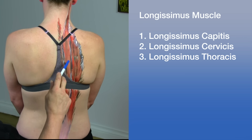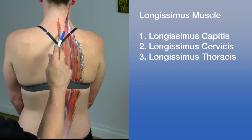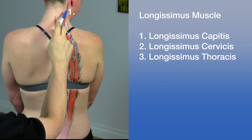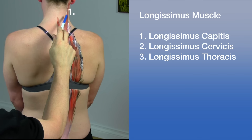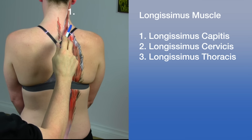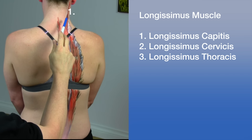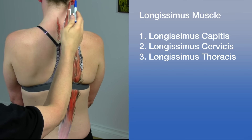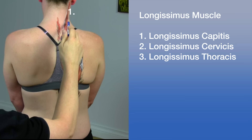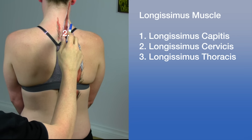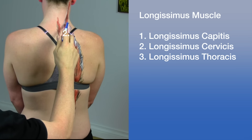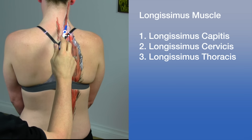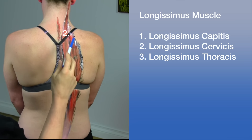On the lateral side, the iliocostalis cervicis runs from the upper six ribs to the transverse processes of the lower cervical spine. The iliocostalis thoracis runs from the lower six to the upper six ribs. The iliocostalis lumborum originates via the iliac crest and the lumbar fascia — a sheet-like structure of dense connective tissue — and inserts on the lower ribs.